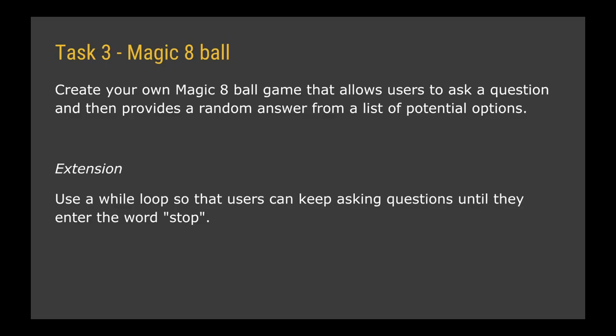For your third task, you need to create your own magic 8-ball game that allows users to ask a question and then provides a random answer from a list of potential options. I gave you three options — I want you to have at least six. And once they've typed in their question, your magic 8-ball should pick one of those responses and show it on the screen. If you want to stretch yourselves, use a while loop so that users can keep asking questions and keep getting randomly chosen responses — continuing indefinitely until the user enters the word 'stop', at which point the loop should stop and the program can end.